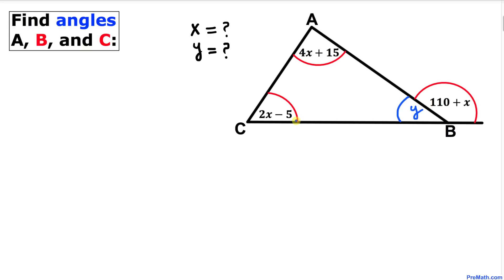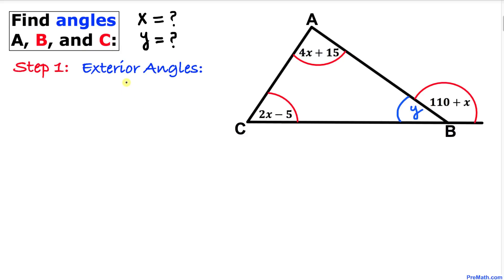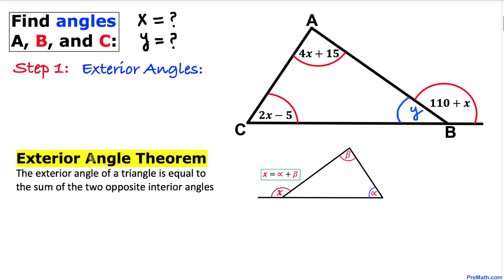I will show you two different approaches to solve this problem. Here's our first step: let's talk about exterior angles. The exterior angle theorem states that the exterior angle of a triangle is equal to the sum of the two opposite interior angles. In our case, this x is our exterior angle and it equals the sum of the two opposite interior angles.